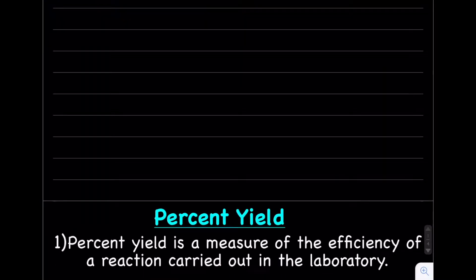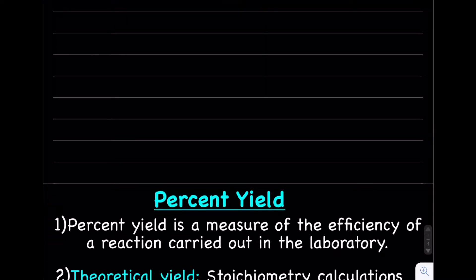Percent yield is a measure of the efficiency of a reaction carried out in the laboratory. Experiments and reactions are never perfect — you are never, never, never going to get exactly what you were hoping to get. So we're measuring the efficiency: how close are we to what we were really thinking we could get?